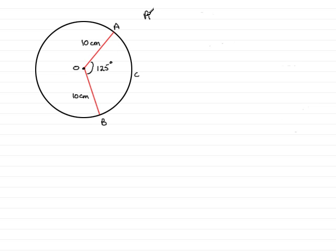If we're asked to find the area of OACB then it's going to equal a fraction of the area of the complete circle. And that fraction was 125 degrees compared to a full turn of 360 degrees.